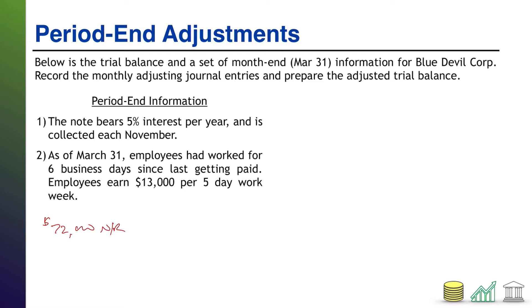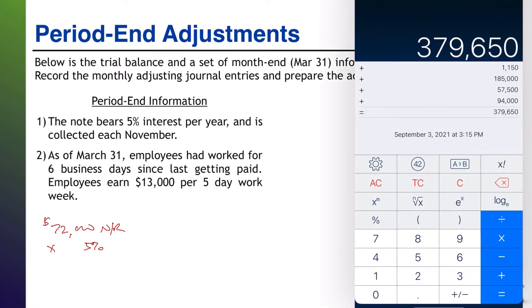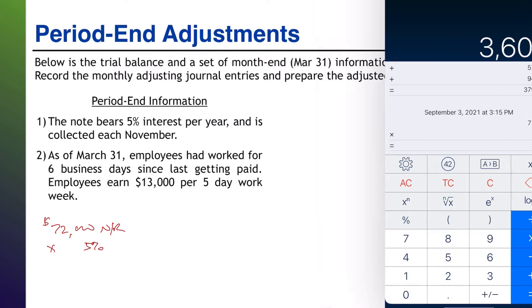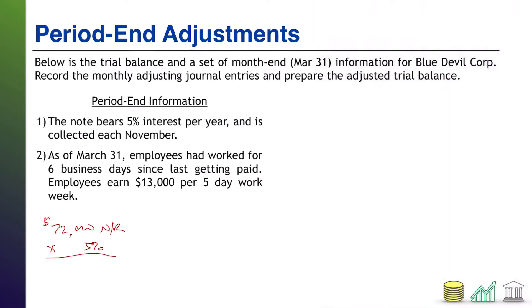It says that the note bears 5% interest per year. So if I take that $72,000 and multiply times 5%, that comes out to $3,600. That is interest per year.